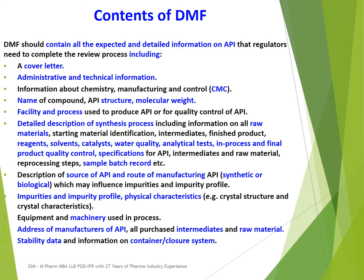Further contents include a detailed description of the source of API and route of manufacturing — whether it is synthetic or biological route — information on impurities and impurity profile, information on physical characteristics including crystal structure and crystal characteristics, information on equipment and machinery used in the manufacturing process, address of manufacturers of API, manufacturers of all purchased intermediates and raw materials, information on stability data, and information on container and closure system.